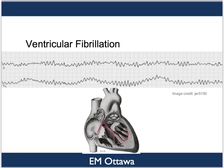Ventricular fibrillation is the next rhythm generated from the ventricles. The difference from ventricular tachycardia is that even though the ventricles are generating a rhythm, it is a fairly uncoordinated rhythm — the ventricles do not contract together as a whole but rather fibrillate or quiver from different parts. On the rhythm strip, the complexes will be wide, they will be irregular because of this quivering, and there will be no P waves. Clinically, the patient is usually unable to generate enough cardiac output to generate a pulse in this rhythm.